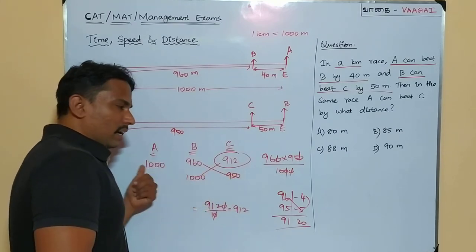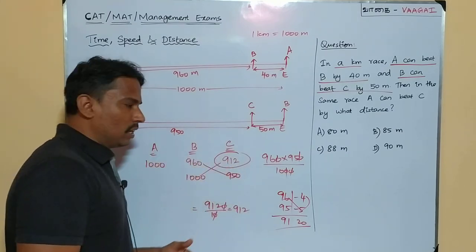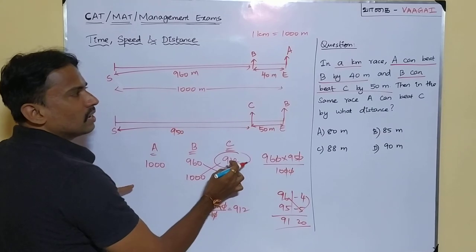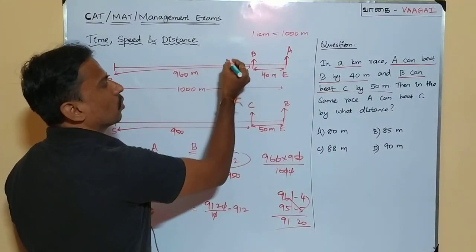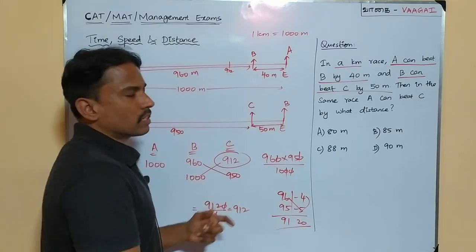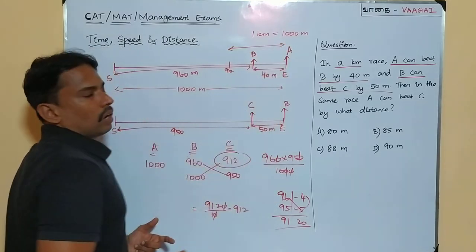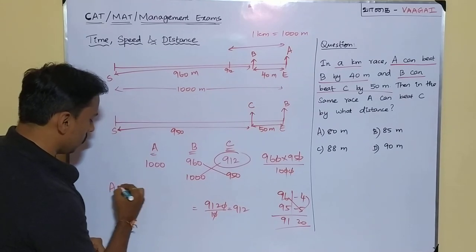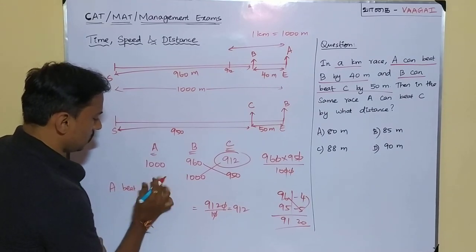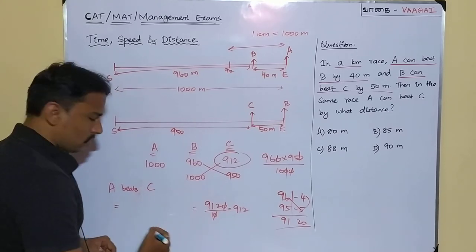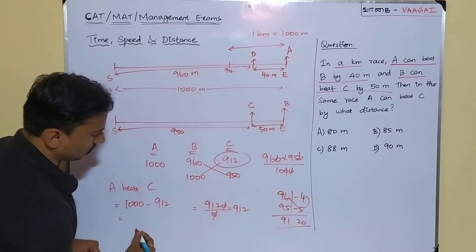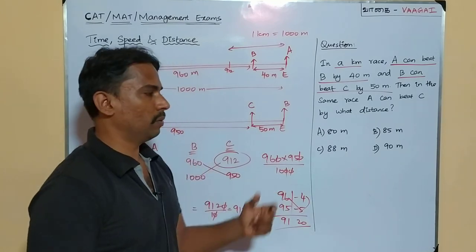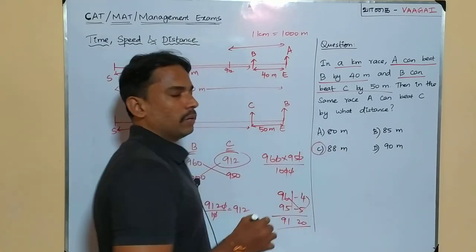From this we can find by how much A beats C. When A is at 1000 meters, C is at 912 meters. The beating distance is 1000 minus 912, which equals 88 meters. So A beats C by 88 meters, and the answer is option C — 88 meters.